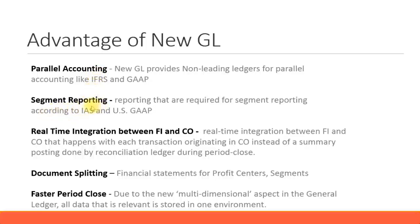Another advantage is segment reporting, and similarly profit center reporting. Some countries require you to report based on segments. As we saw in an earlier presentation, segments, profit centers, and business areas serve different reporting purposes. With NewGL, if you want to do segment-wise reporting, you can do that. Similarly, profit center-wise reporting is also possible. You can design complete financial statements — both your balance sheet and P&L statement — for segments as well as profit centers using NewGL.